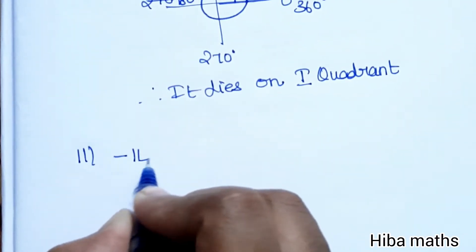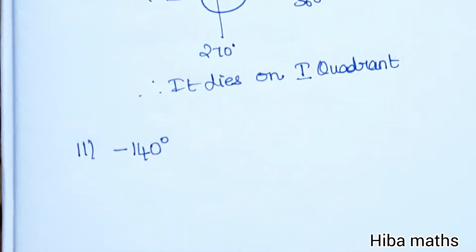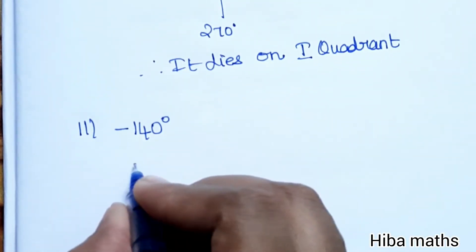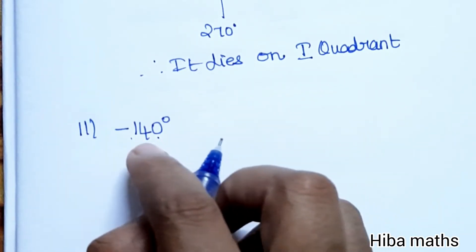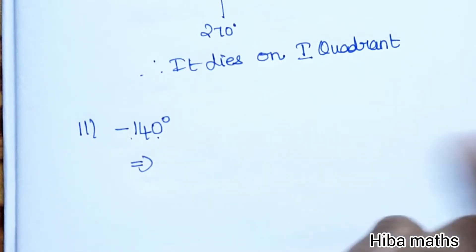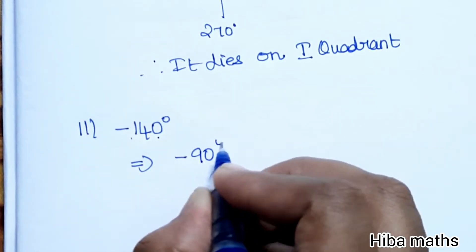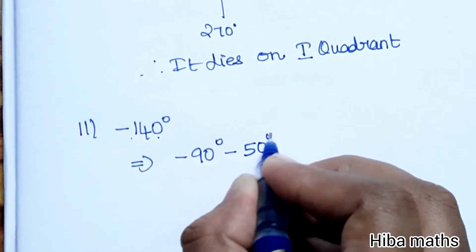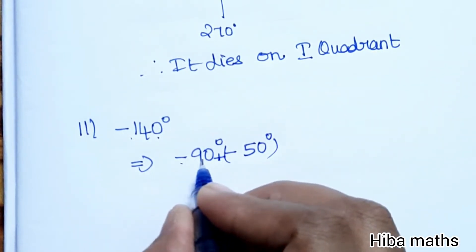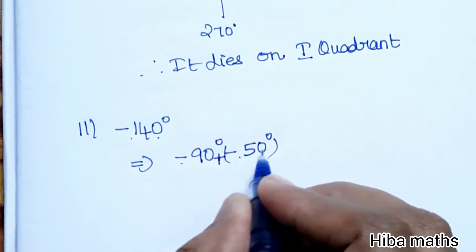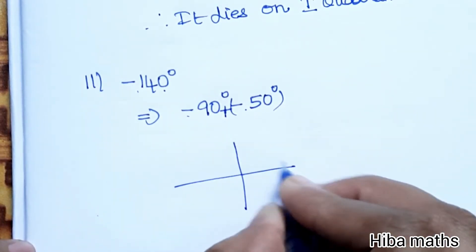The second question is minus 140 degrees. Minus means reverse — you need to go in the clockwise direction. If you get 140 degrees, you need to understand that it is between 90 and 180 degrees: 90 degrees plus 50 degrees equals 140 degrees. This puts us in the negative quadrant direction.